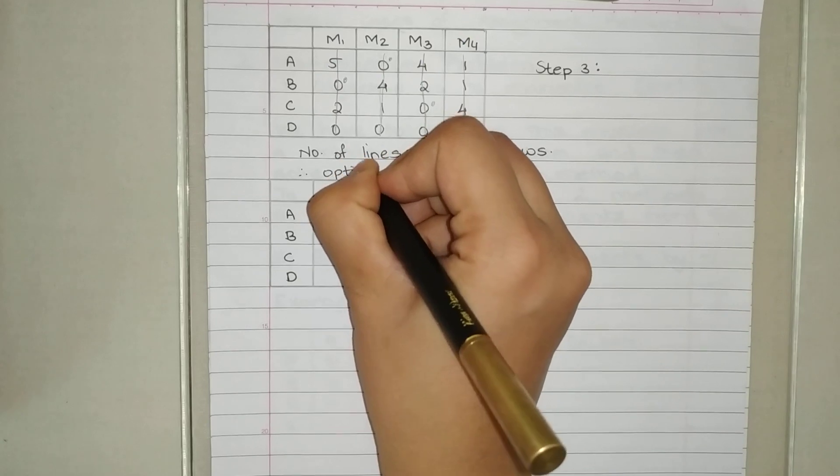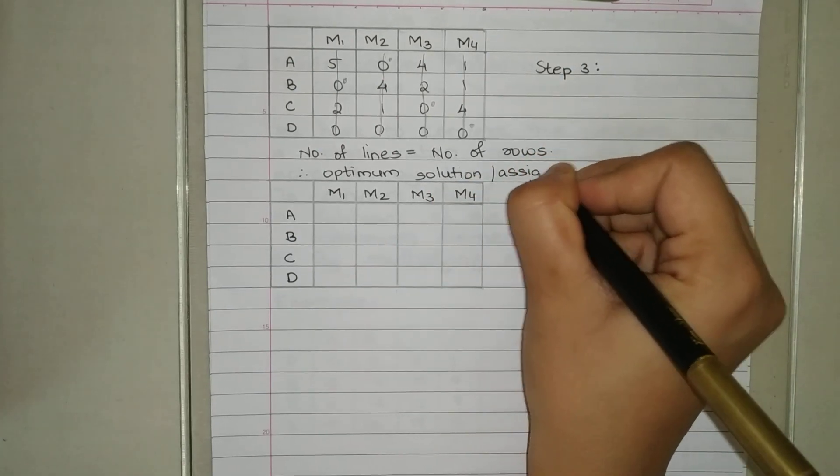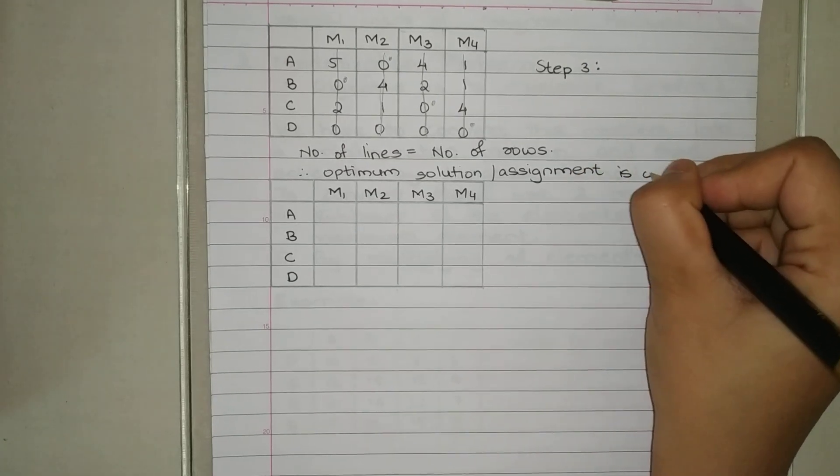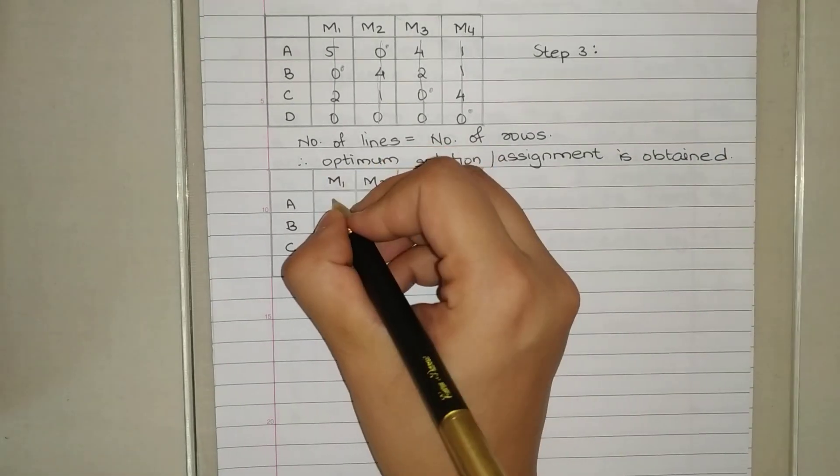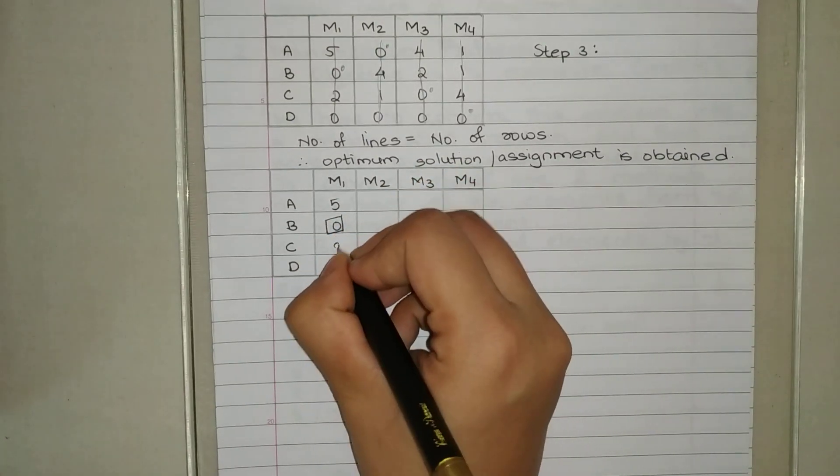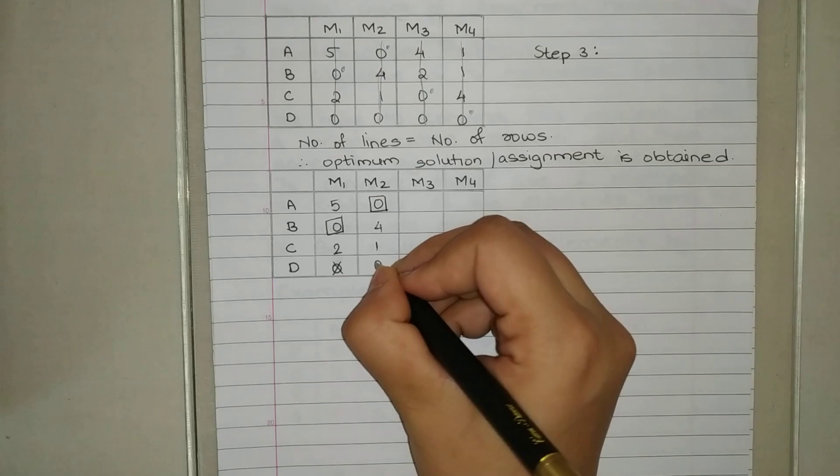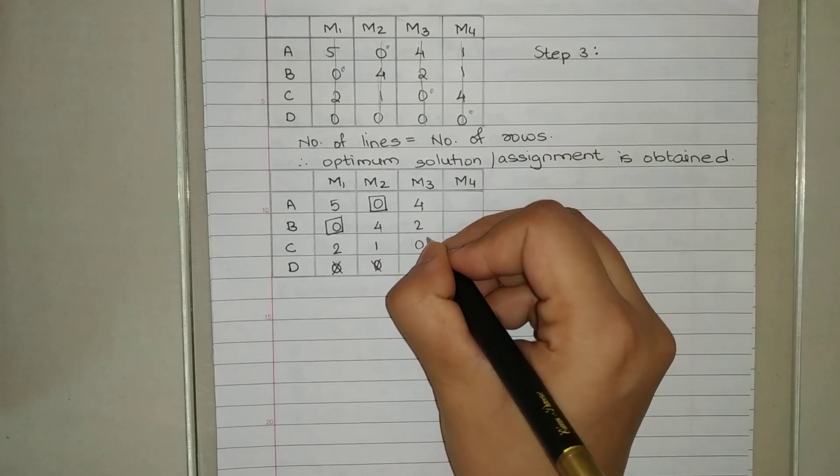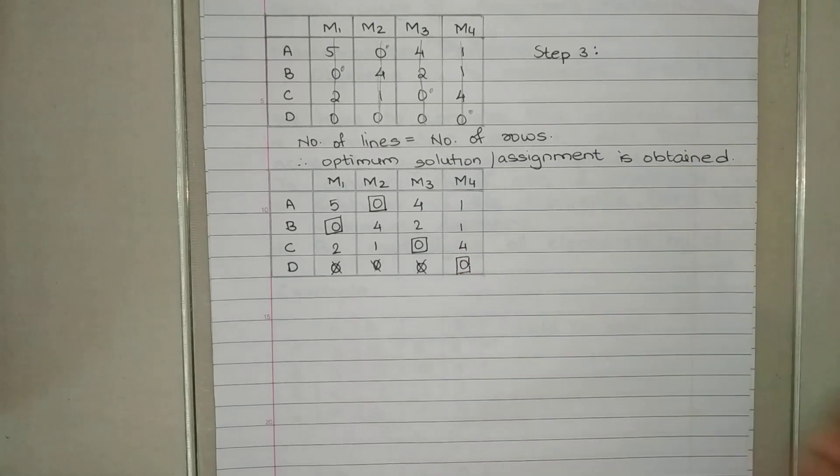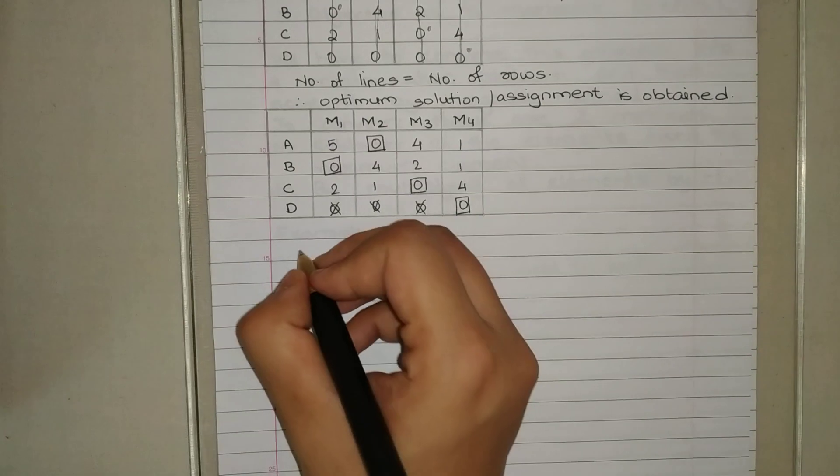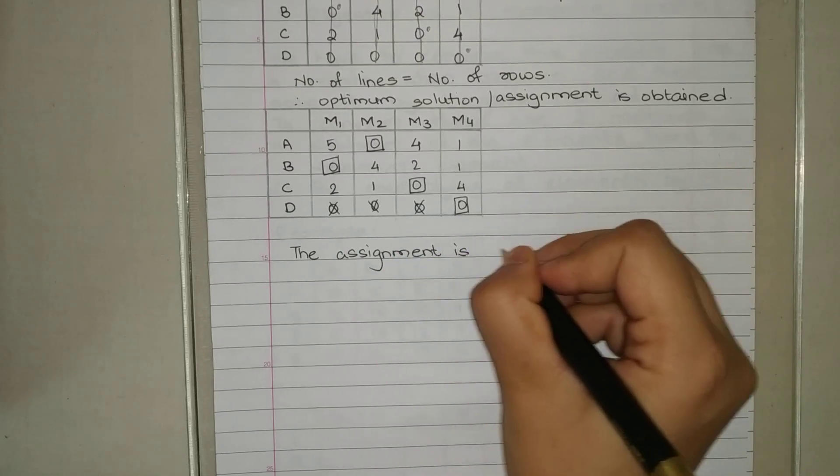Therefore, optimum solution or assignment is obtained. And we'll write everything back, where there is a dot, put a square. Five, box, four, one. Zero, four, two, box. Zero, box, one, one. Zero, zero, four, box. The assignment is as follows.